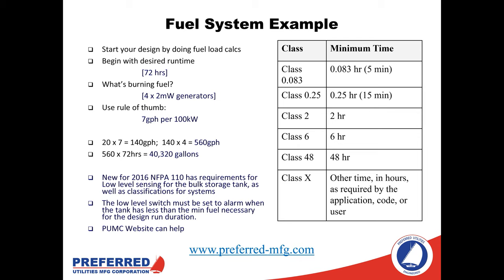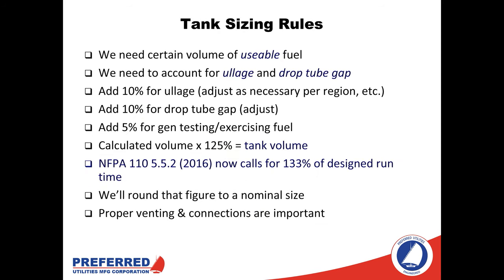Multiplying the burn rate by our total runtime, we get a raw number of 40,320 gallons. This is a raw number that needs adjustments. We have tools on our website, preferred-mfg.com, to help calculate how much fuel you need. We need to account for ullage — the headspace on the bulk storage tank that can't be filled with fuel — as well as drop tube gap, which is the fuel at the bottom that can't be pulled out because the drop tube for the suction side doesn't go all the way to the bottom.